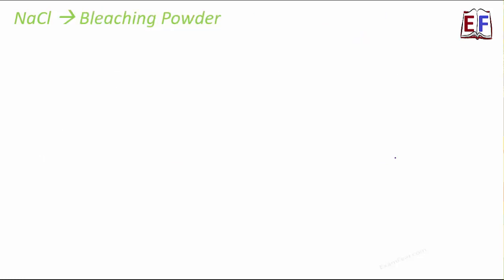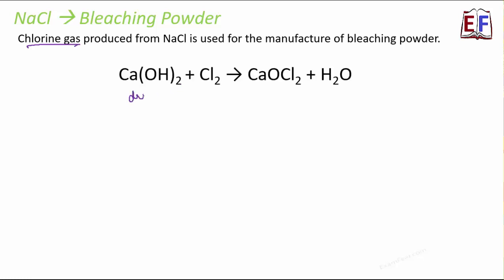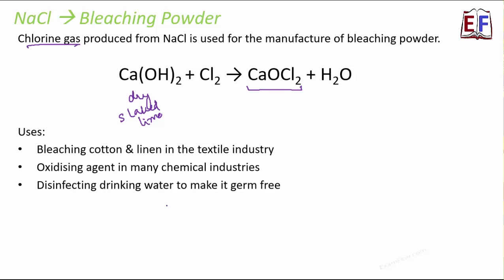The next product is bleaching powder. Where have you heard that we use bleaching powder to bleach clothes, like bleaching cotton or bleaching linen? That's where we normally use bleaching powder. How is bleaching powder formed? Bleaching powder is formed from chlorine gas. And from where do we get chlorine gas? From NaCl. From NaCl, we get chlorine gas. This chlorine gas is used for the manufacture of bleaching powder. When Ca(OH)2, that is dry slaked lime, when this reacts with chlorine, it forms a bleaching powder, that is CaOCl2. Water is released as part of the process. Some of the uses of bleaching powder: bleaching cotton and linen in textile industry. It is used as an oxidizing agent in many chemical industries. Another very important use is, it is used to disinfect drinking water to make it germ-free.